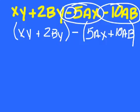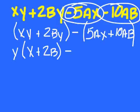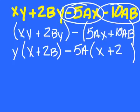Very important to do that. If you don't, you're going to miss the rest of the problem. What comes out of the first group? Just a Y and what am I left with? X plus 2b. And then what comes out of the second one? 5a. And what am I left with? X plus 2b.